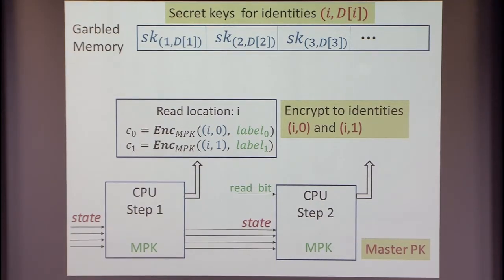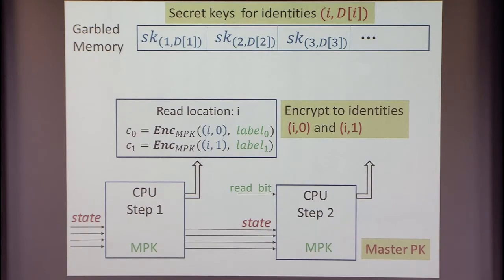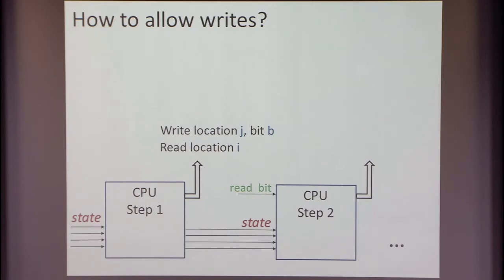Now let's use public-key encryption — nothing really changes, just replace the master secret key with a master public key. The garbled data in each location still holds secret keys for identities. The translation table entries become identity-based public-key encryptions to identities (i,0) and (i,1), and now the circuits have a hard-coded master public key. This breaks the circularity — the ciphertext cannot be decrypted even if you know all the stuff hard-coded in other circuits. That was read-only computation; how do we allow writes?